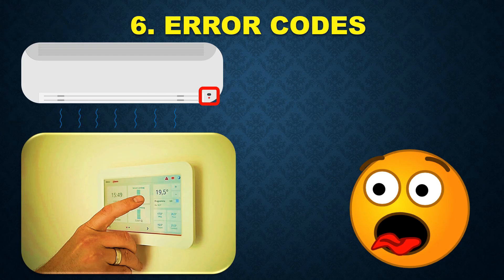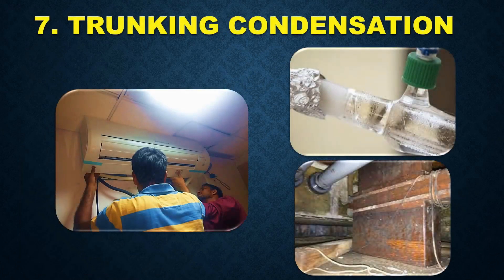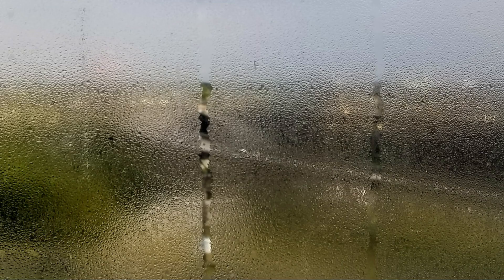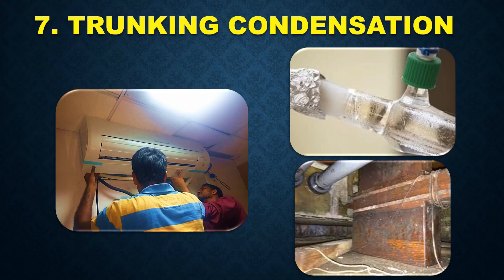The seventh problem is trunking condensation. We apply a cover to the AC electrical cables and copper conduits during installation. Sometimes due to the condensation process, water starts to drip from this casing when we switch on the AC. This happens because when the moisture content in air comes in contact with the chilled air in the AC, it becomes water and starts to flow in the casing. This happens due to inappropriate insulation in the piping system or due to blockage in the trunking system. You need to repair this at the next service. It does not damage other parts so it is not urgent, but make sure it is done without fail.